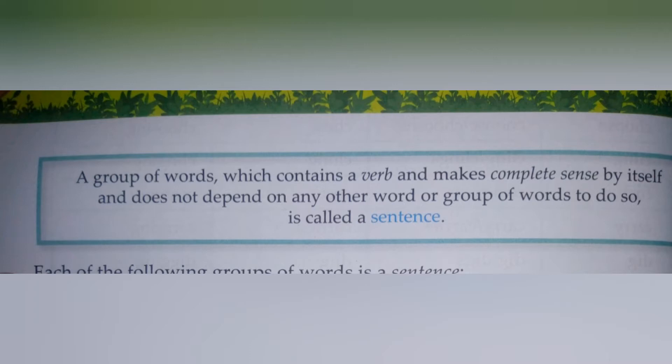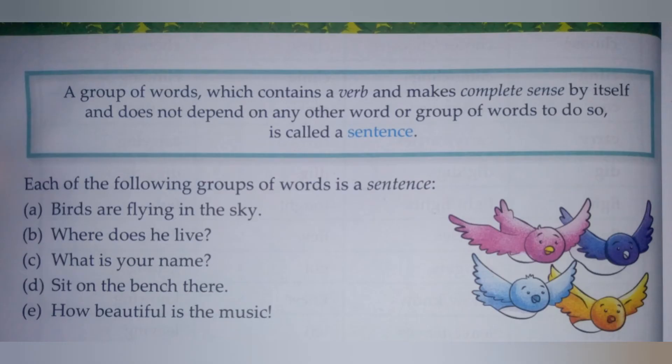A group of words which contains verbs and makes complete sense by itself, and thus does not depend on any other word or group of words to do so, is called a sentence. This is the definition of a sentence — when a group of words join together, they become a sentence. Each of the following group of words is a sentence.